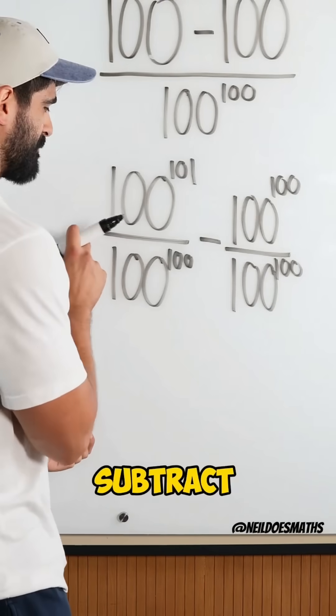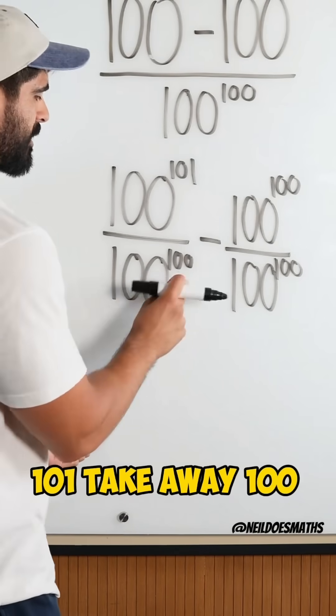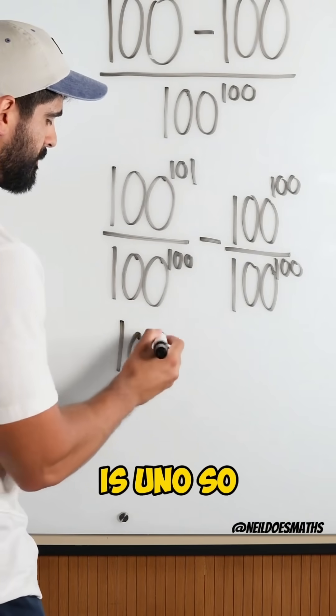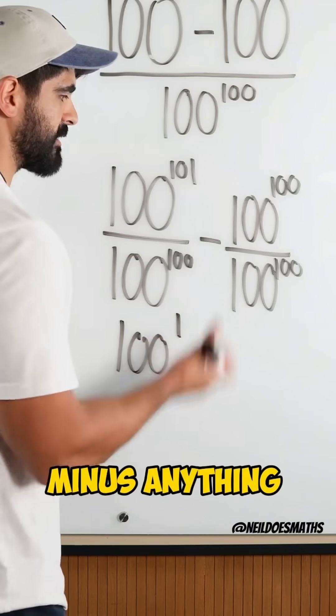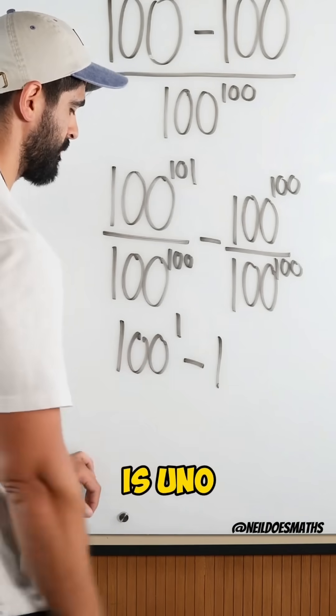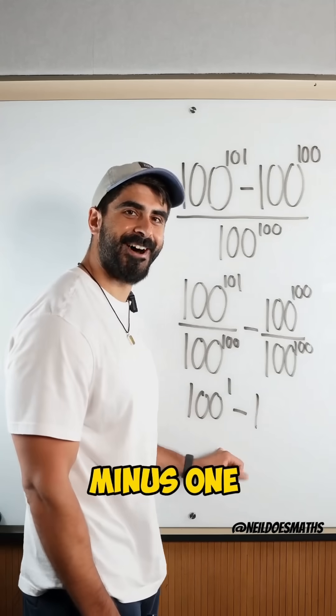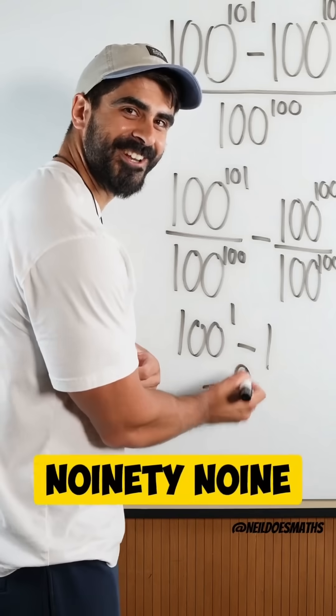Now we can subtract the powers. 101 take away 100 is 1. So you have 100 to the power of 1 minus anything divided by itself is 1. So we're left with 100 minus 1 is 99.